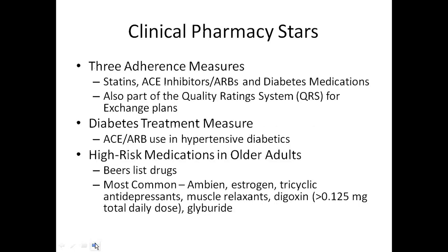The five clinical pharmacy STARS measures include three adherence measures. Right now, adherence is measured for statins, ACE inhibitors and ARBs, and diabetes medications — essentially all oral diabetes meds plus injectable non-insulin agents like Victoza, Bydureon, and Tanzeum. The adherence measures are also important because they're part of the QRS — the quality rating system for exchange plans — so now it's not just Medicare but also commercial plans looking at medication adherence measures.